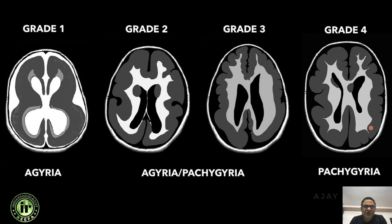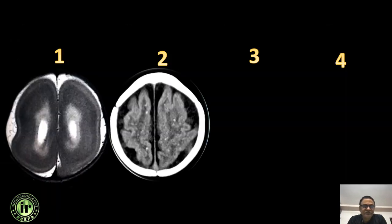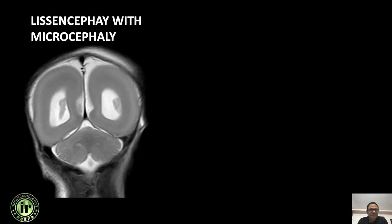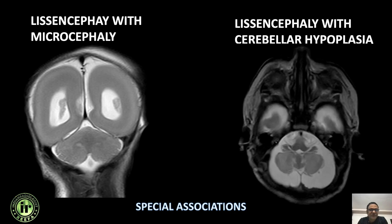Slowly the sulcation and gyration improves — grade 4 is better, not worse. Grade 6 is called band-like heterotopia. This is the agyria-pachygyria-lissencephaly complex grading, from no sulci to decent sulci in later grades. If microcephaly is associated with lissencephaly, you call it micro-lissencephaly. If cerebellar hypoplasia is associated, you call it LCH — lissencephaly with cerebellar hypoplasia — which has a specific genetic association.